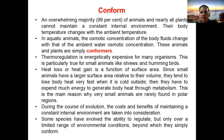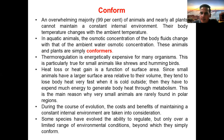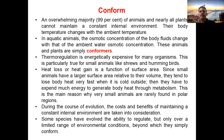The second method is conforming. An overwhelming majority of animals and nearly all plants cannot maintain a constant internal environment; their body temperature changes with the ambient temperature. Most plants and animals adapt to the external environment. In aquatic animals, the osmotic concentration of the body fluid changes with that of the ambient water osmotic concentration. These animals and plants are called conformers. So regulators are those regulating body temperature, while conformers are those living or adapting to natural conditions.